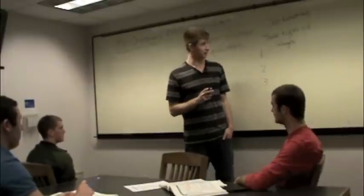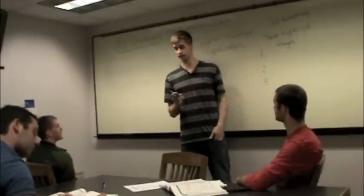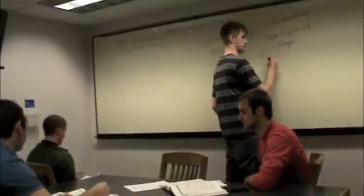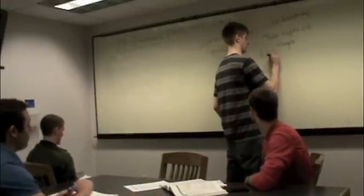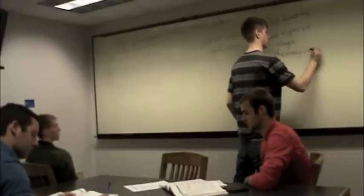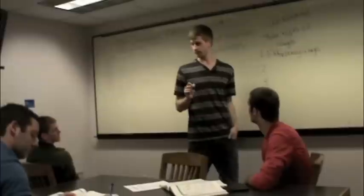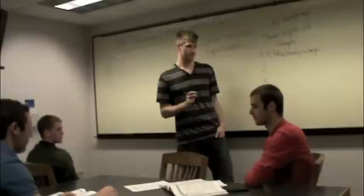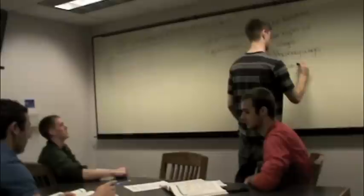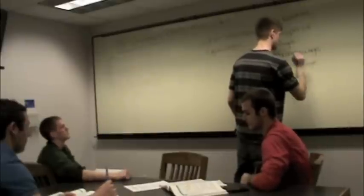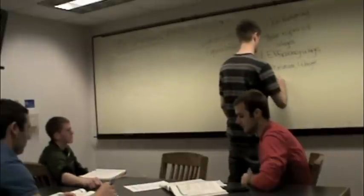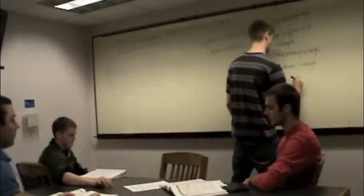What are the three types of wages? First, the efficiency wage is a real wage rate set above the full employment equilibrium wage rate to induce greater work effort. Second, the minimum wage law is the government regulation that makes hiring labor for less than a specified wage illegal. Third, the union wage is the wage rate that results from collective bargaining between a labor union and a firm.